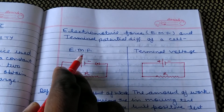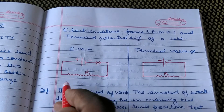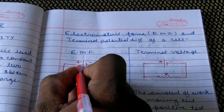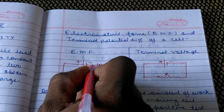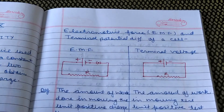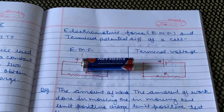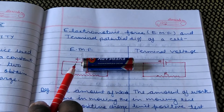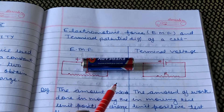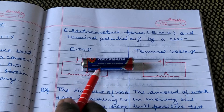When the cell is in an open circuit condition, the potential difference between the two terminals is known as the EMF of the cell. Suppose you connect a voltmeter across these two terminals — then its reading will be 1.5 volt.